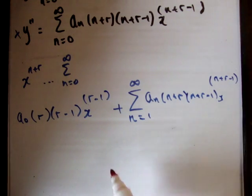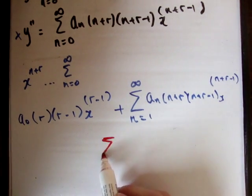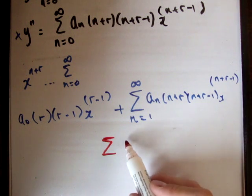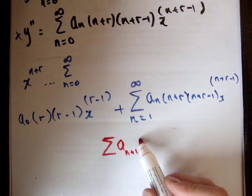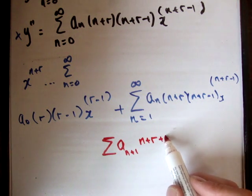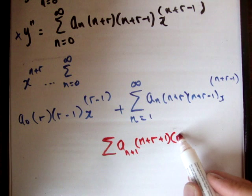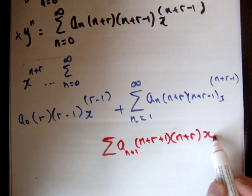So I'll do this in red and I'll do it over here. So we're going to get the sum, I'll leave this blank here for the moment. So every place I have n, I'm going to put n plus 1, a n plus 1, n plus r plus 1, n plus r, x to the n plus r.